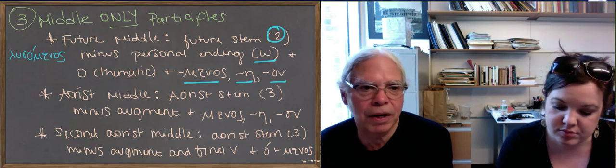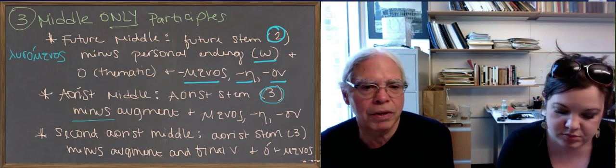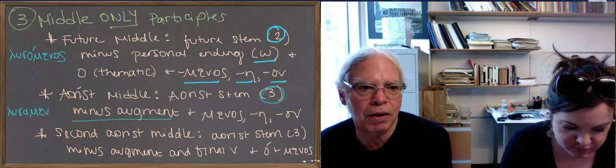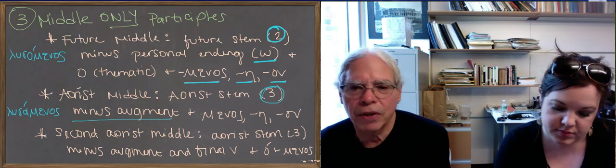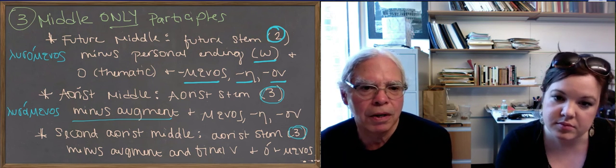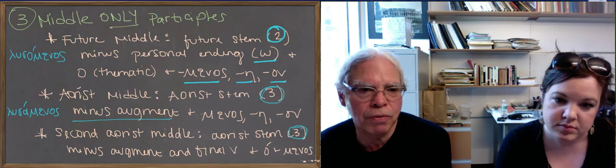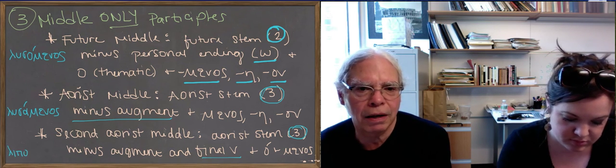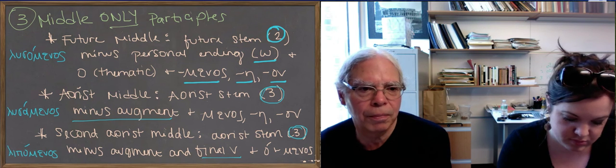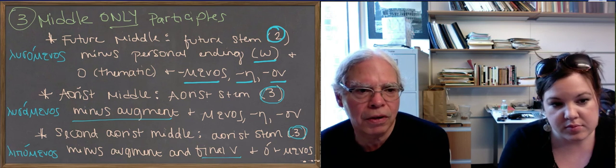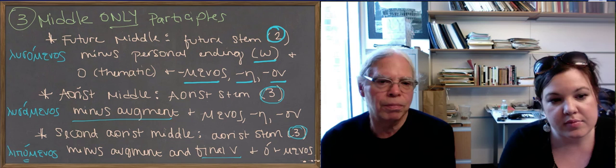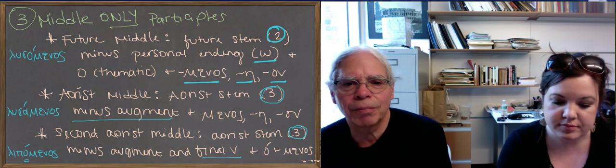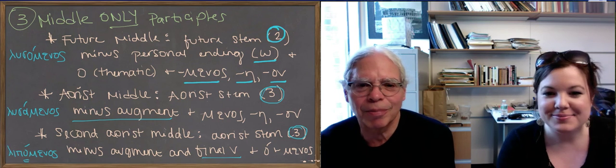For the aorist middle, you start with the aorist stem, remove the augment, and just directly to what's there, add menos. So, if we have elysa, for example, we remove the epsilon, we get lysa, and then we add menos, mene, menon. For the second aorist, when we only had one second aorist verb, leipō, you start with that principal part, elipon, you remove the augment and the final nu. So, from elipon, you get lipo, and you add the suffix menos. Notice that you've got an accent on the o. That's normal, that it's recessive accent, but it's also normal for second aorist forms that the thematic vowel has the accent. So, it's lipmenos, lipmene, lipomenon. We ran out of space there. So, we got some dots. Okay, thanks.